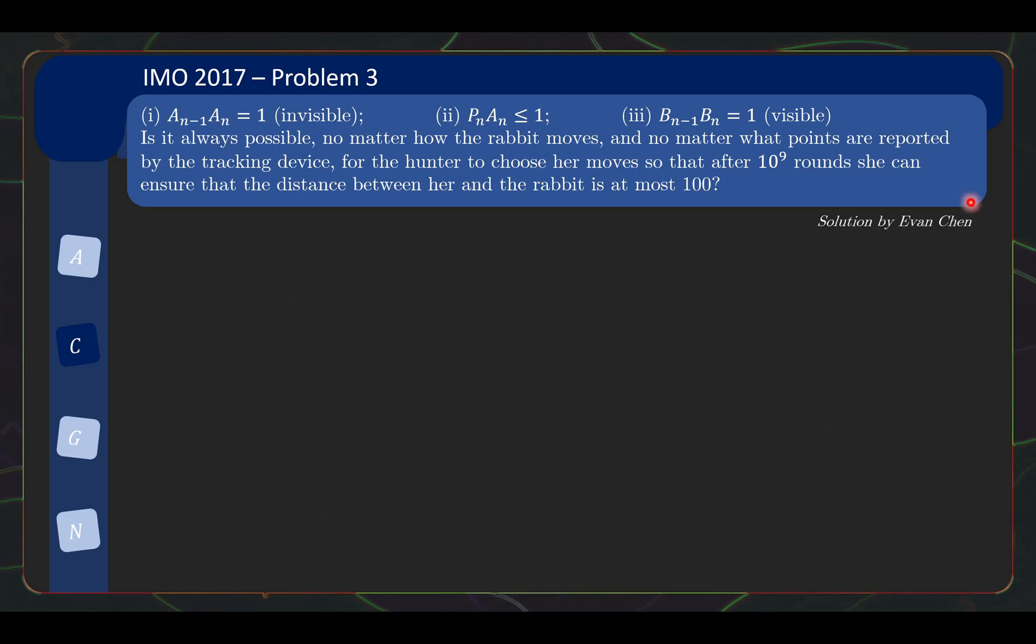Let us now take a look at the solution to this problem. So the solution to this problem turns out to be no, which means that we need to show the following. The hunter cannot guarantee staying within a distance of 100 after 10 to the 9 rounds. What does this mean in English? It means no matter what strategy the hunter comes up with, there is always some scenario of the rabbit moves and the tracking device points that will cause the hunter under that strategy to be at a distance of above 100 after 10 to the 9 rounds. So the hunter, whatever strategy comes up with, there's always at least one scenario that she cannot cover that ground.